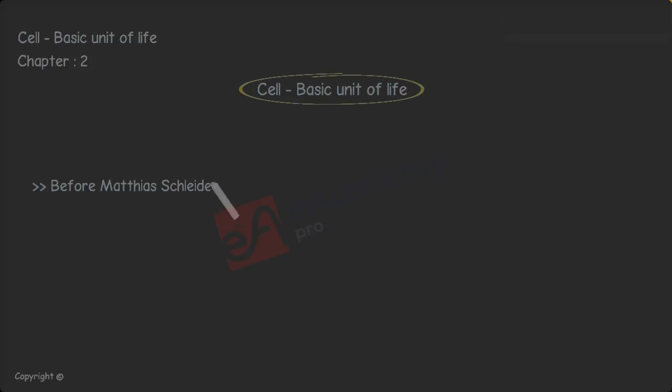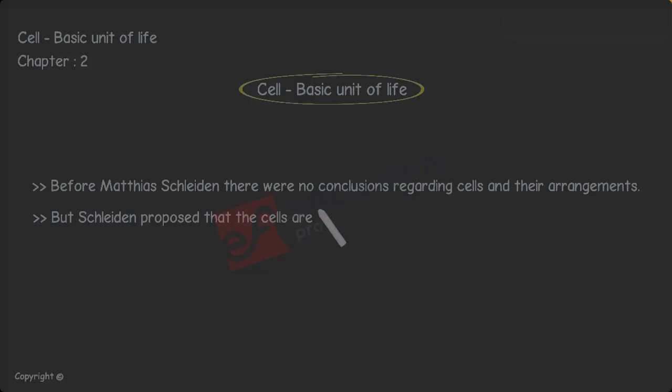Before Matthias Schleiden, there were no conclusions regarding cells and their arrangements. But Schleiden proposed that the cells are the basic building blocks as he found that a plant consists of many cells and it arises from a single cell.